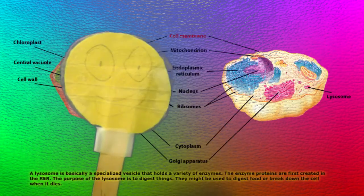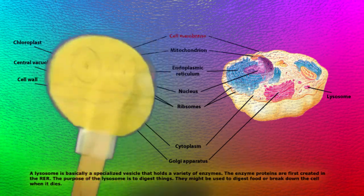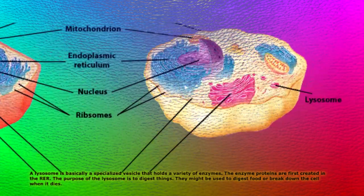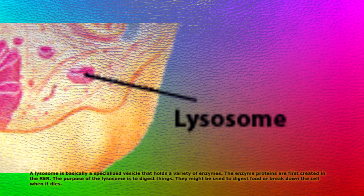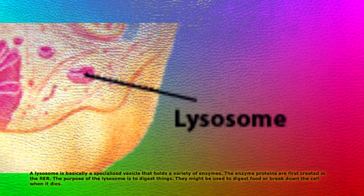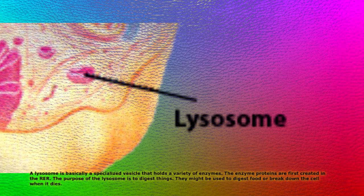And now, unique organelles found only in animal cells. A lysosome is a specialized vesicle that holds a variety of enzymes. The enzyme proteins are first created in the rough ER. The purpose of the lysosome is to digest things — they might be used to digest food or break down the cell when it dies.